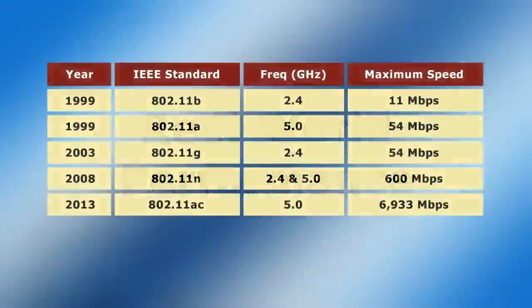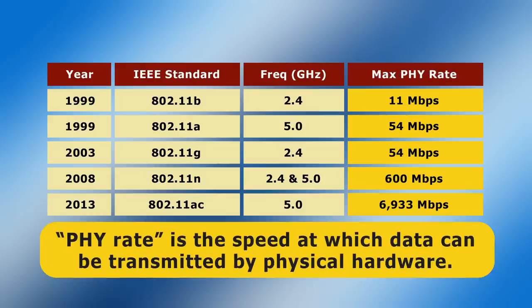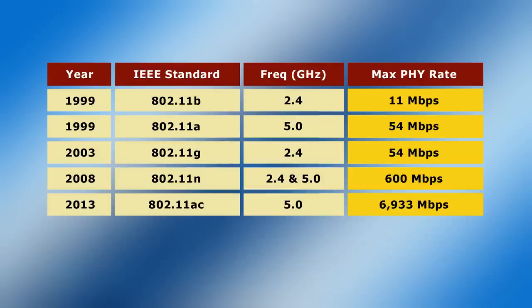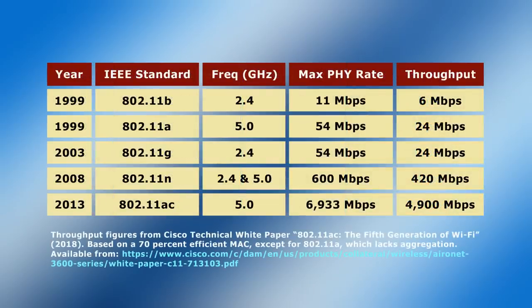Before we continue, it's important to note what the data transfer speeds noted actually mean. The figures cited are the theoretical maximum data transfer speeds for each standard, but these speeds will never be enjoyed by a user for three reasons. Firstly, the figures are the maximum physical layer speed, or PHY rate, which is the maximum speed at which bits of data can be transmitted by physical hardware. However, hardware utilisation is never totally efficient, so the real-world data rate, or throughput, has to be lower. Here are some typical throughput figures, based on a Cisco white paper that calculates them based on 70% efficiency in most cases.